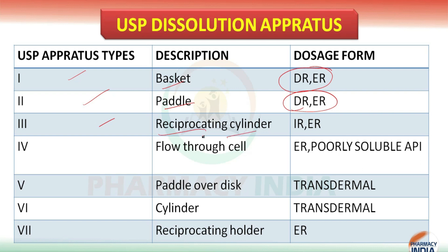Students, try to note down or memorize these names, because in your GPAT exam they sometimes ask what is the USP Apparatus 2 — you have to answer: Paddle. Now the third one, the Reciprocating Cylinder, is used for IR (immediate release) and ER (extended release). The fourth one is the Flow-Through Cell.